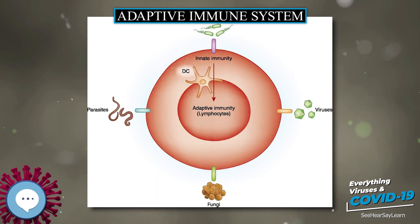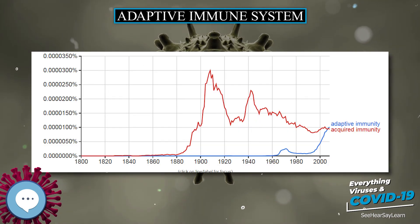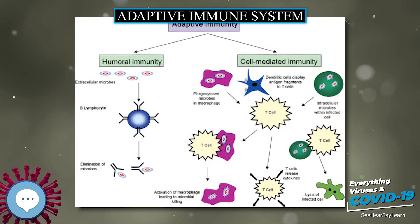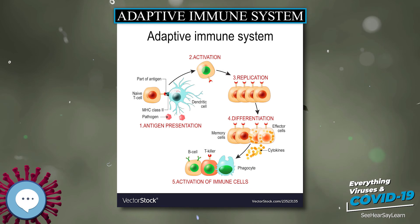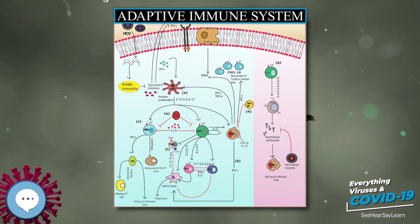Throughout an animal's lifetime, lymphocytes that can react against the antigens an animal actually encounters are selected for action, directed against anything that expresses that antigen. The innate and acquired portions of the immune system work together, not in spite of each other. The acquired arm — B cells and T cells — could not function without innate system input: T cells are useless without antigen-presenting cells to activate them, and B cells are crippled without T cell help. On the other hand, the innate system would likely be overrun with pathogens without the specialized action of the adaptive immune response.